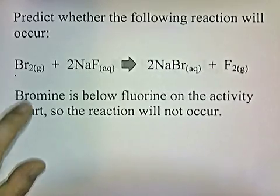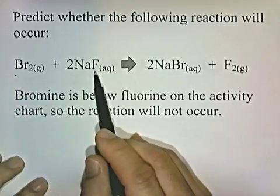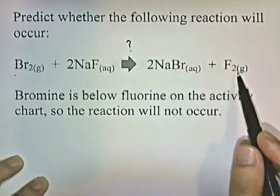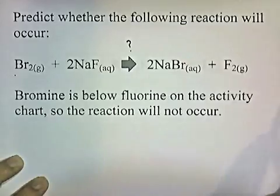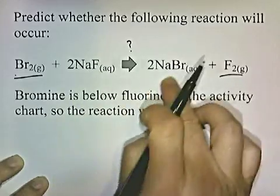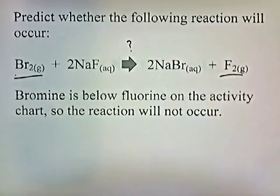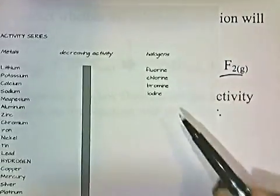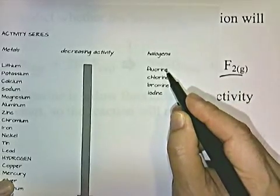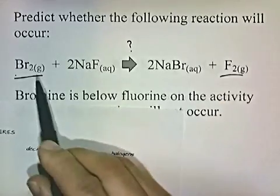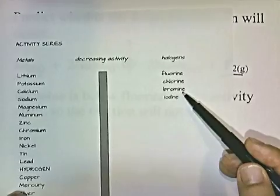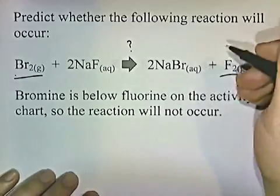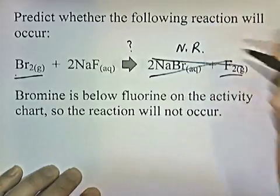Predict whether the following reaction will occur: bromine gas being bubbled through a sodium fluoride solution — will sodium bromide and fluorine gas be made? The elements in this reaction are bromine and fluorine; bromine and fluorine are halogens, so we use the halogens side of the chart. Bromine is below fluorine on the activity chart, but bromine has to be above fluorine for the reaction to occur. So the reaction will not occur — we write NR for no reaction.